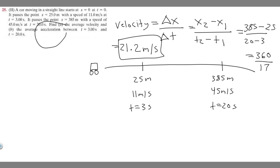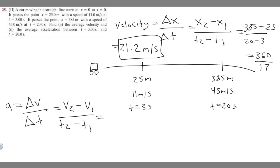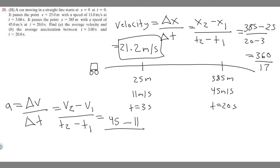Now let's do part B: acceleration over this same interval. Acceleration A equals change in velocity over change in time — you need to memorize that. So it's final velocity V sub 2 minus initial velocity V sub 1, over T sub 2 minus our starting time. Our interval is from 3 to 20 seconds. At 20 seconds we're traveling at 45 meters per second, and at 3 seconds the velocity is 11 meters per second. So it's 45 minus 11 over 20 minus 3, which is 34 over 17.